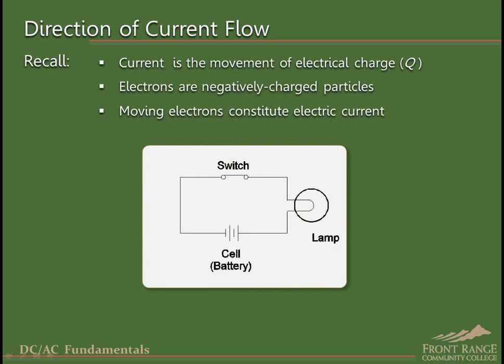On a schematic diagram, a DC current through a wire or component is labeled with an uppercase I, along with an arrow to indicate the direction of current flow.